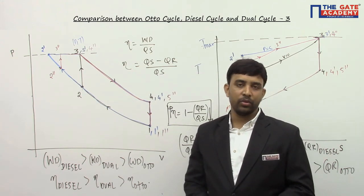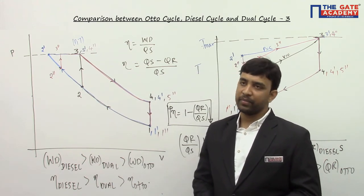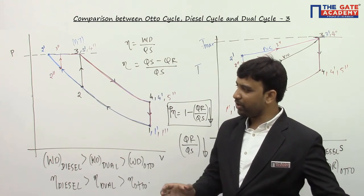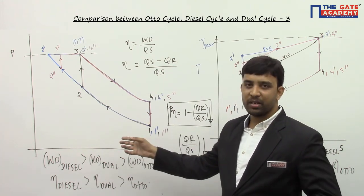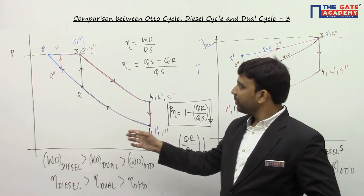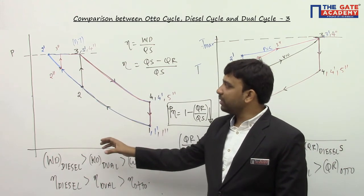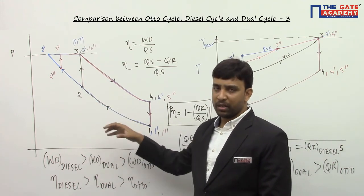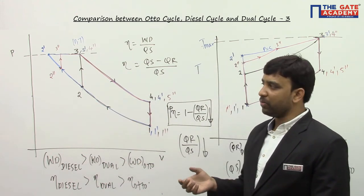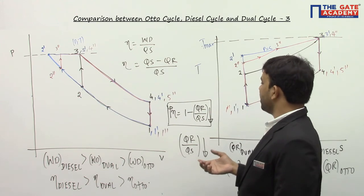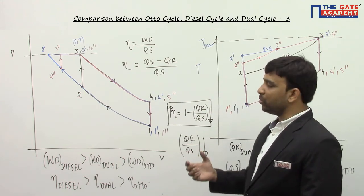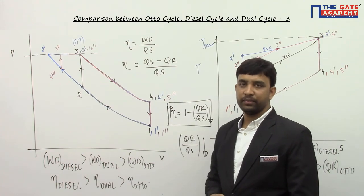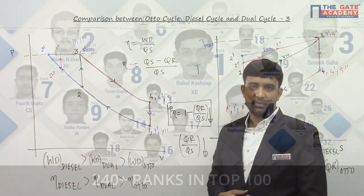This is how you do the comparison between cycles under these constraints. Whenever they ask you to compare work done or pressure ratios, you work in PV coordinates. And whenever they talk about temperatures, heat input, or heat rejection, you work in TS coordinates.